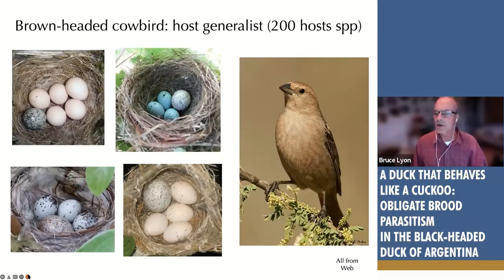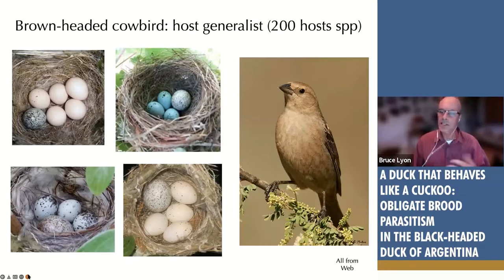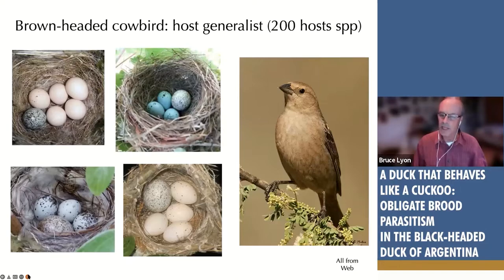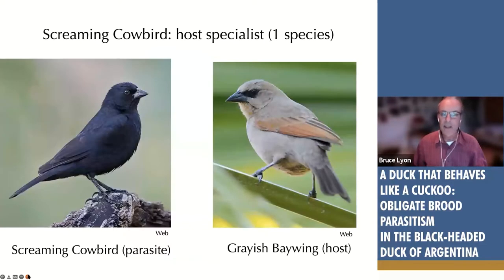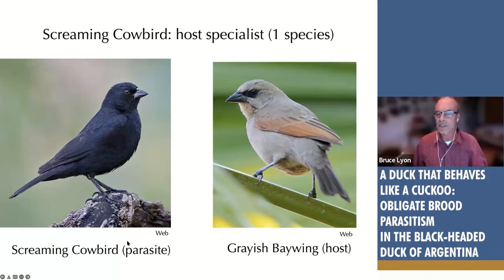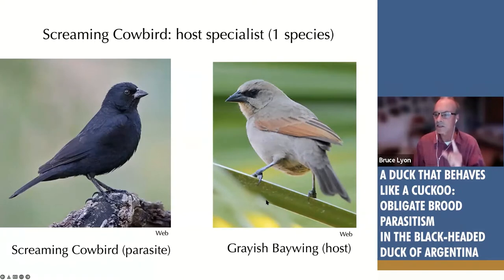Some brood parasites like the brown-headed cowbird are host generalists — cowbird eggs have been found in at least 200 different species of birds, so it's not very picky. A close relative, the South American screaming cowbird, is at the other extreme: it's essentially completely dependent on only one host, the grayish baywing, to raise its babies. There are some exceptions, but by and large it's dependent on a single host species — very specialized.